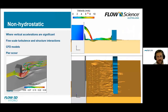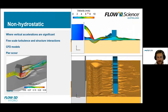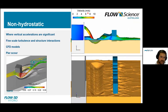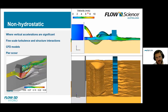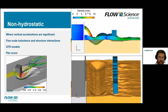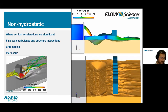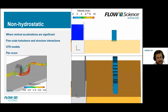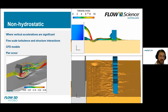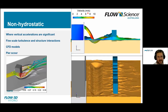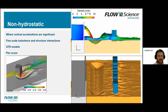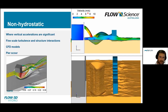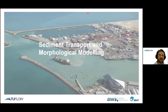For models with significant vertical acceleration — such as flow going off a weir or very fine-scale eddies and vertical rollers around a structure — we need to move to a non-hydrostatic CFD model. Fine-scale pier scour is a great example of where a CFD model is needed. That covers a quick overview of the different hydrodynamic behaviours that can be modelled with different types of model.